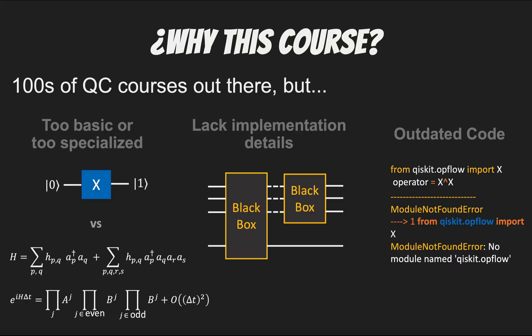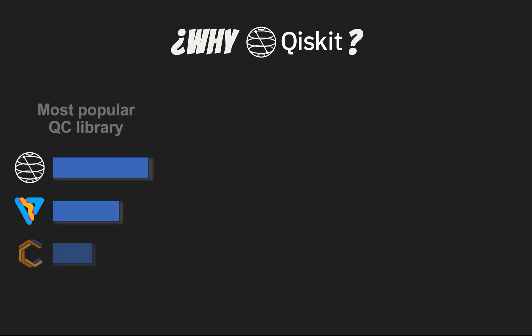Now the next obvious question is why Qiskit? I mean after all there are many other libraries out there. Now a good reason is that Qiskit is by far the most popular development kit for quantum computing so that makes it a lot easier to find resources to solve different issues. Also it has some great visualization tools that are already integrated within the library which in my opinion plays a huge role in making it easier to explain and grasp new ideas.